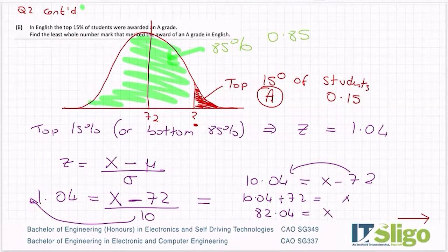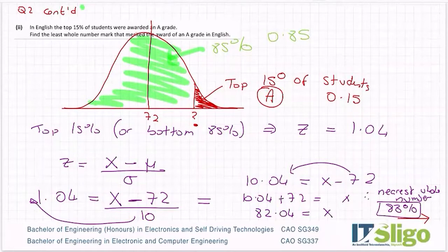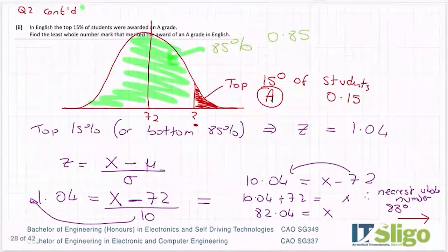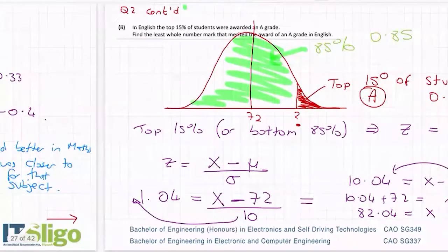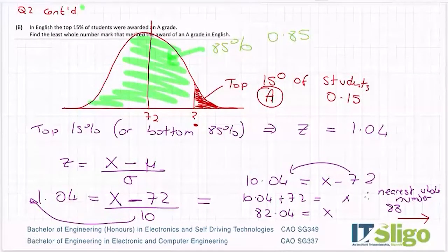So find the least whole number. I need a mark of 82.04 to be guaranteed an A. So therefore, nearest whole number is not 82. But in fact, to be sure of an A, you would need 83 percent, or a score of 83 rather than 83 percent. A score of 83 to be guaranteed to be in the top 15 percent of students.